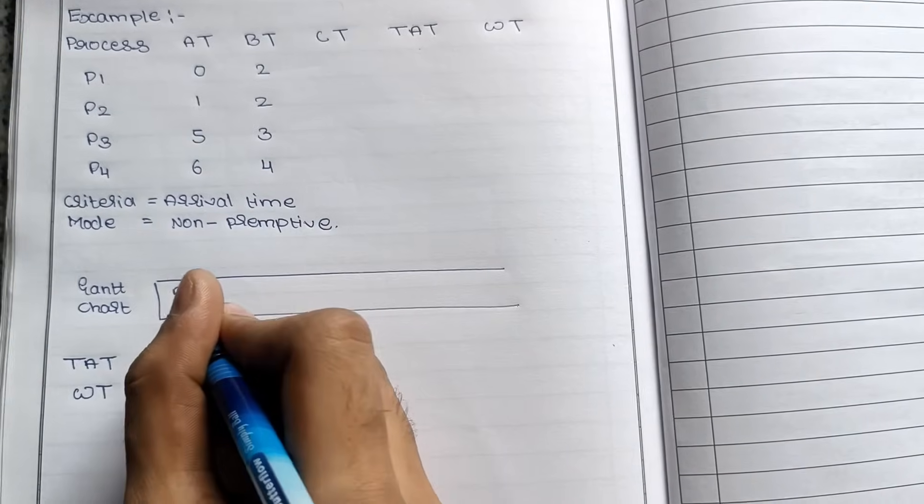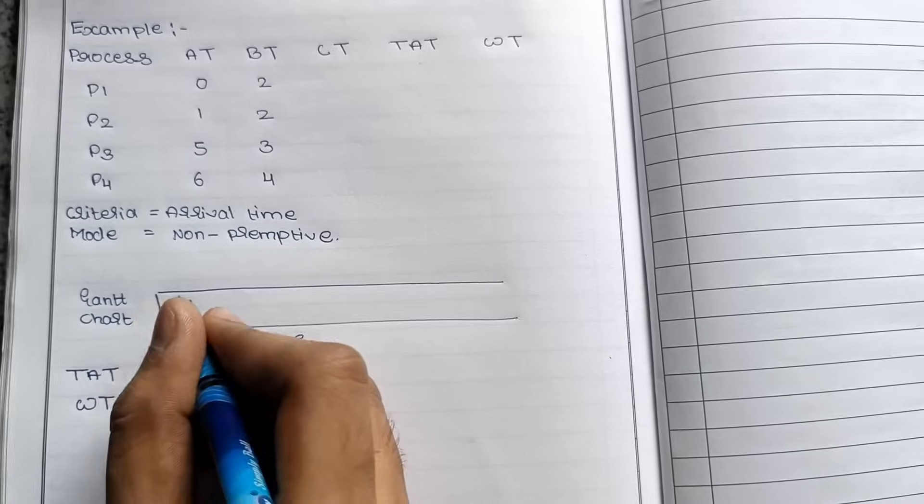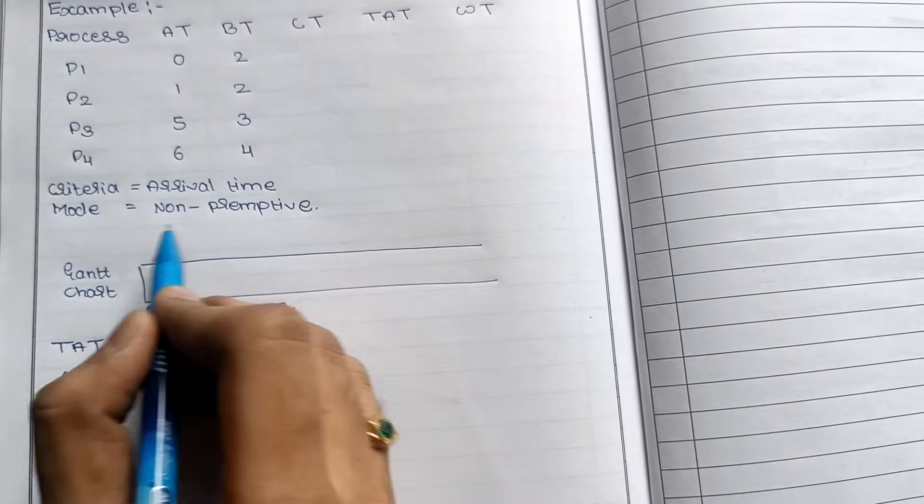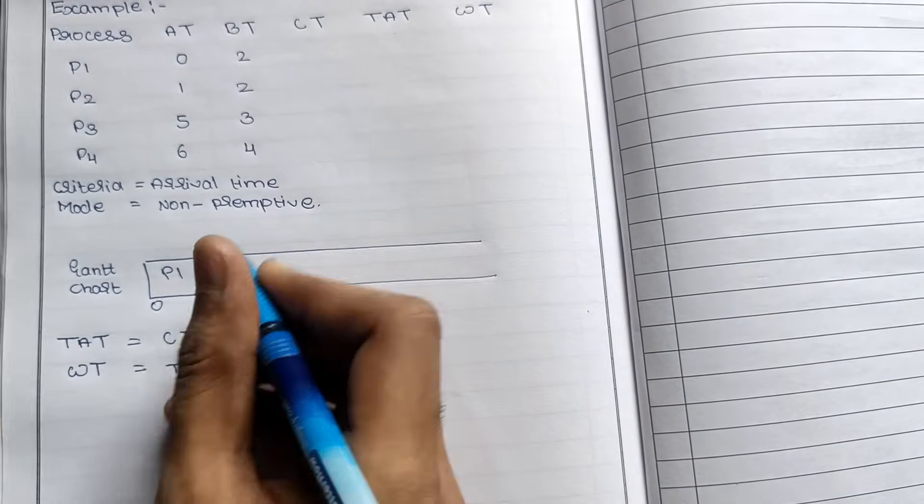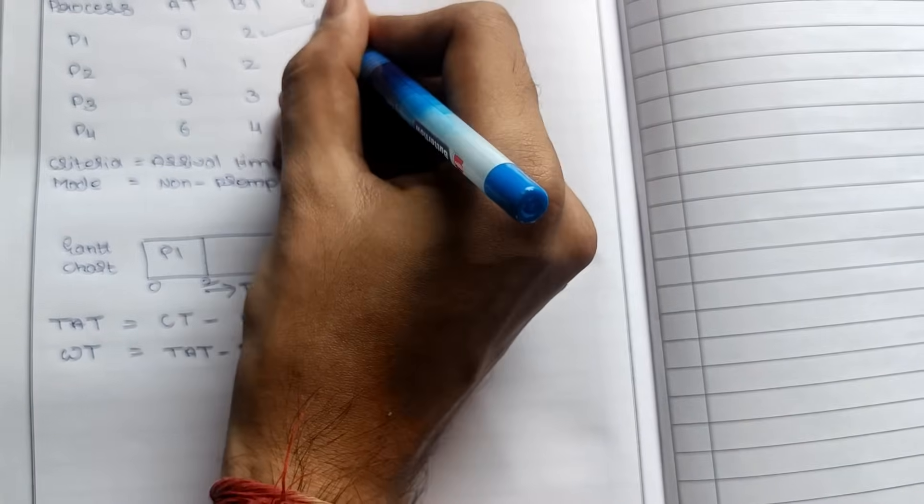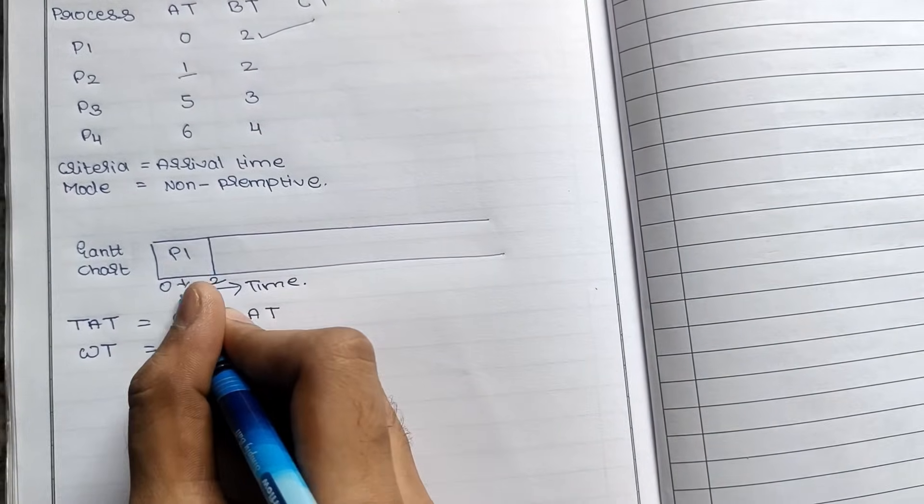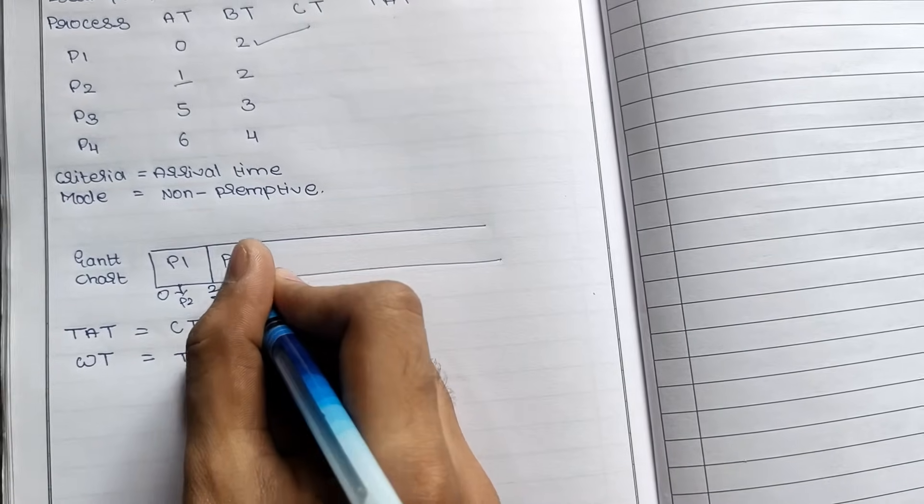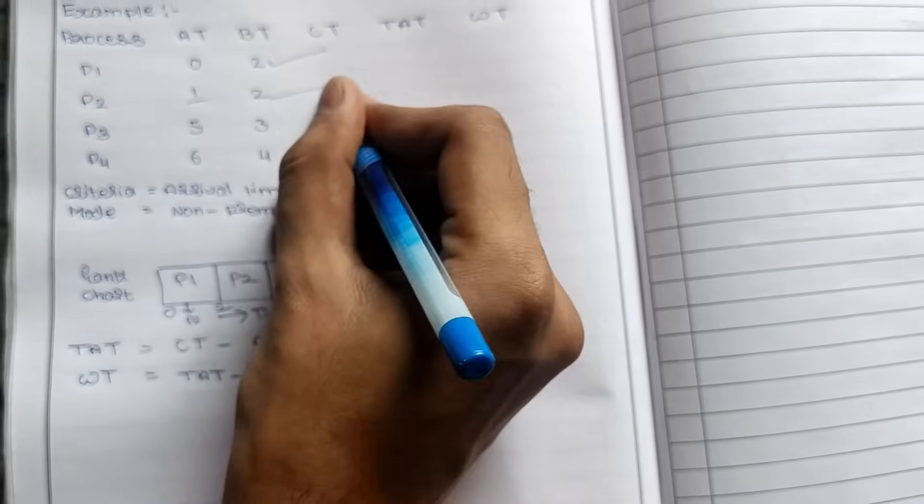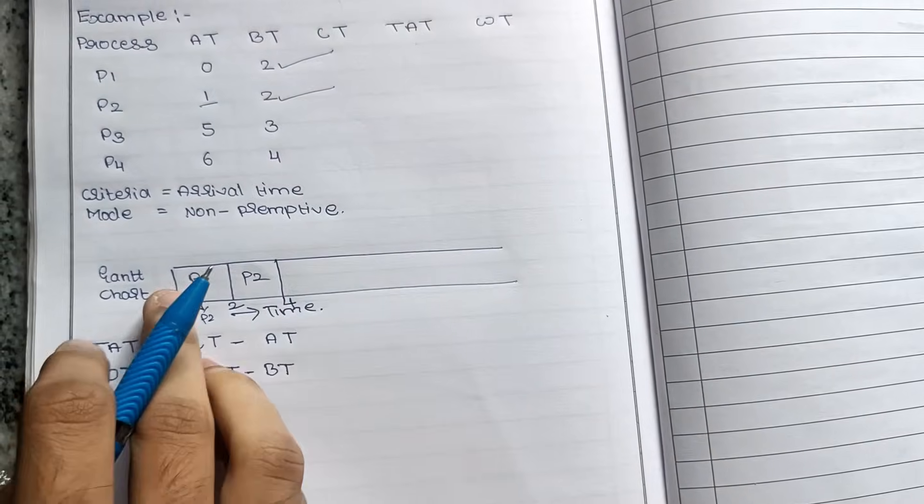So we will start the Gantt chart. Arrival time for P1 is 0, so I am using the P1 process. As usual, this is non-preemptive, so I will complete the full job. Next time is P1. Then P2 arrives at time 1, so P2 is already there. Next I will assign P2. This mode is non-preemptive.